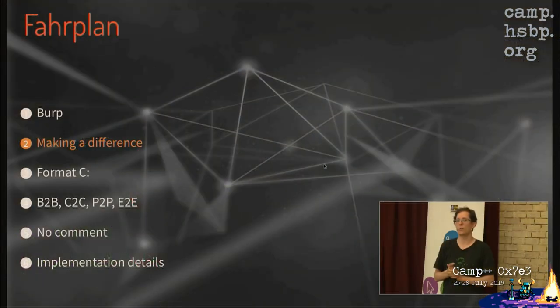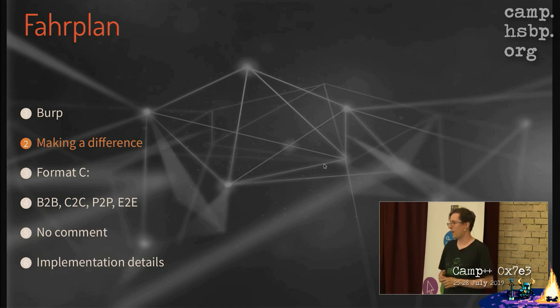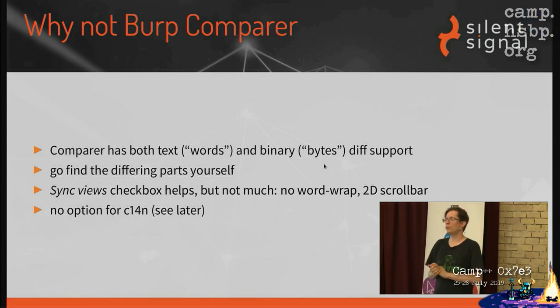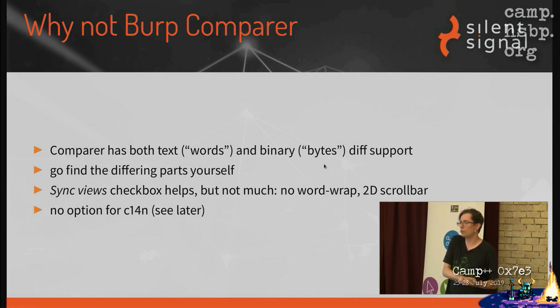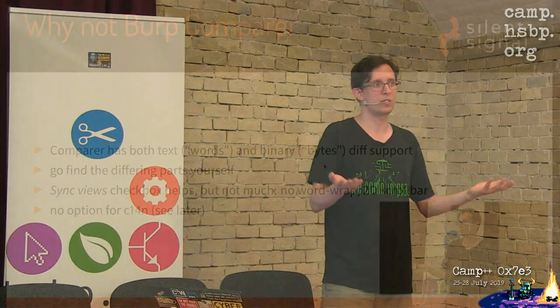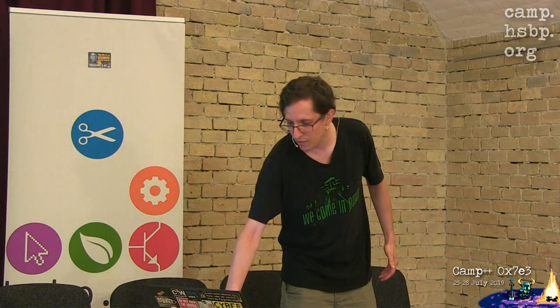In the next four sections, I'll show you four different problems which Piper aims to solve. First: when you want to compare things, because that's one of the basic steps — you send instructions to a remote system, some kind of response arrives, and you try to see what difference it makes if you change the input. There's a built-in Burp tool called Comparer with two modes — words and bytes — roughly text and binary diffing. But it's not really usable for serious work: you have to scroll the whole document to find where the changes are.